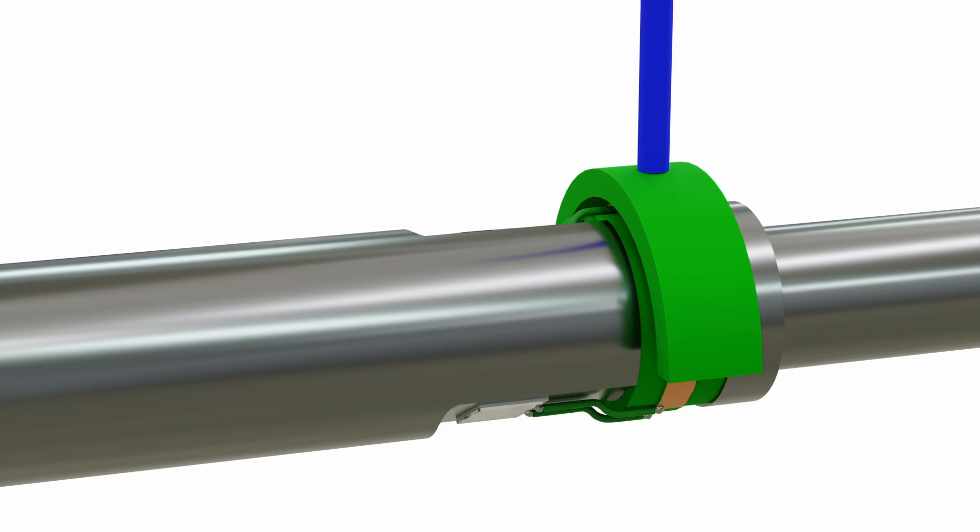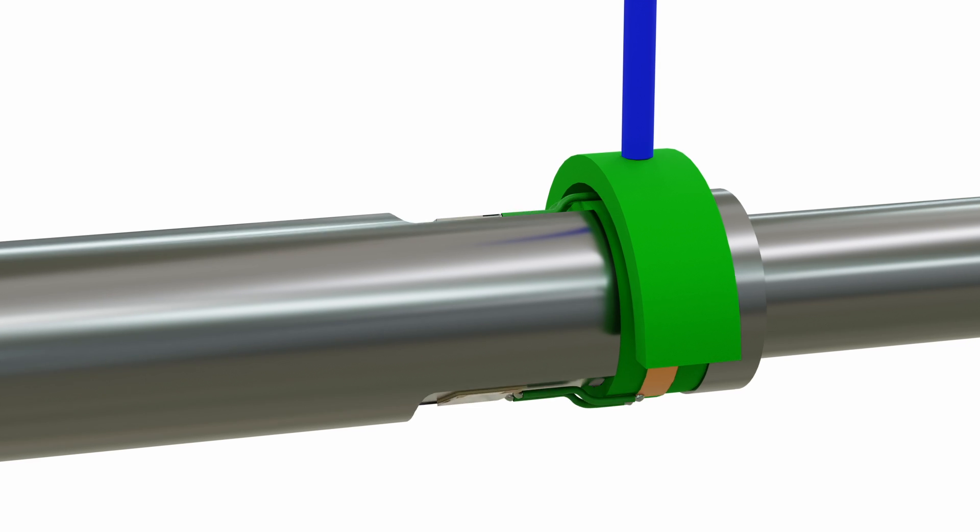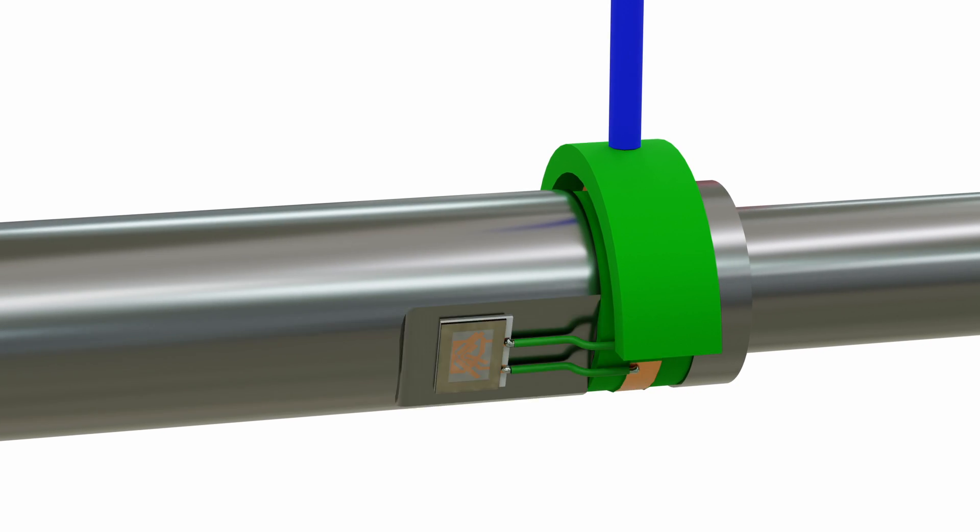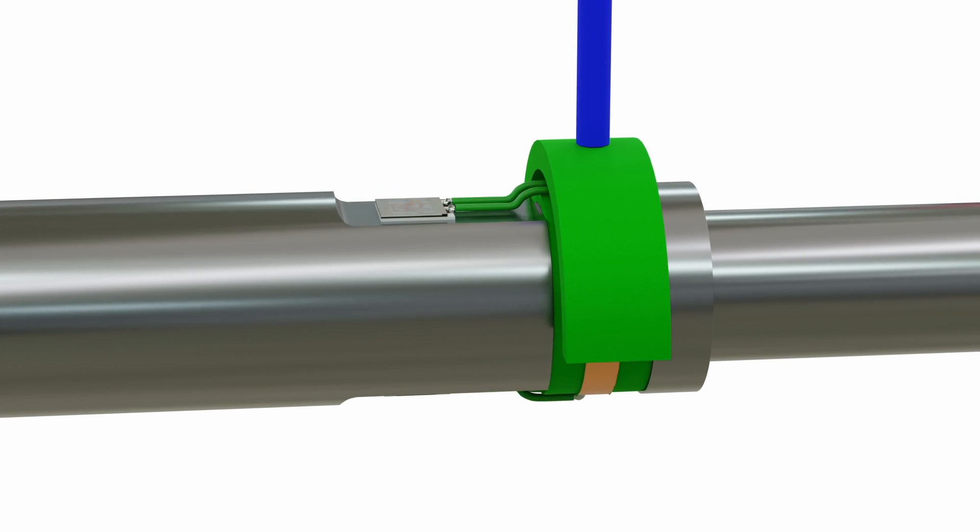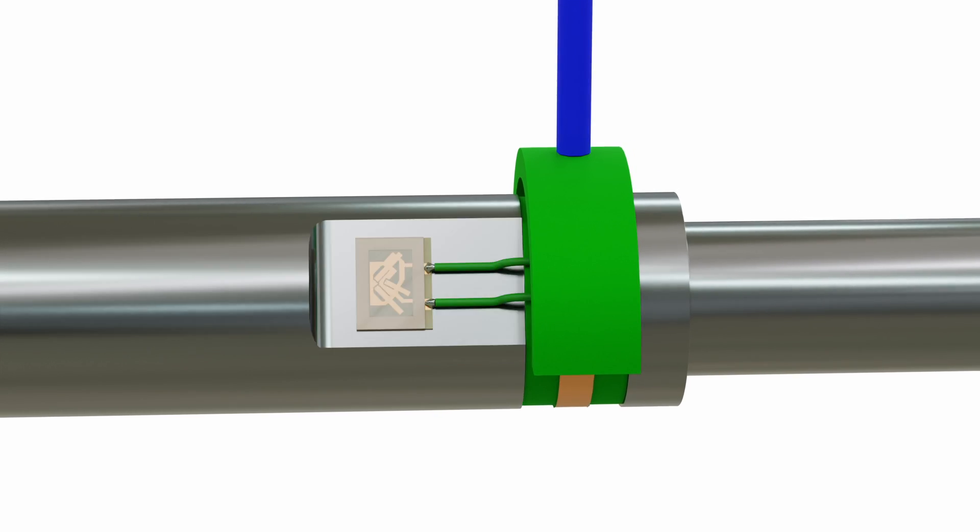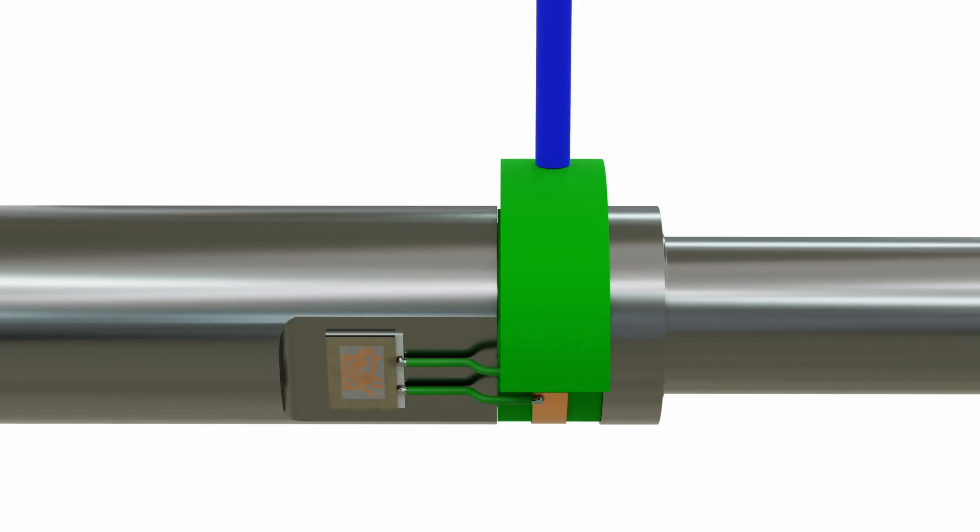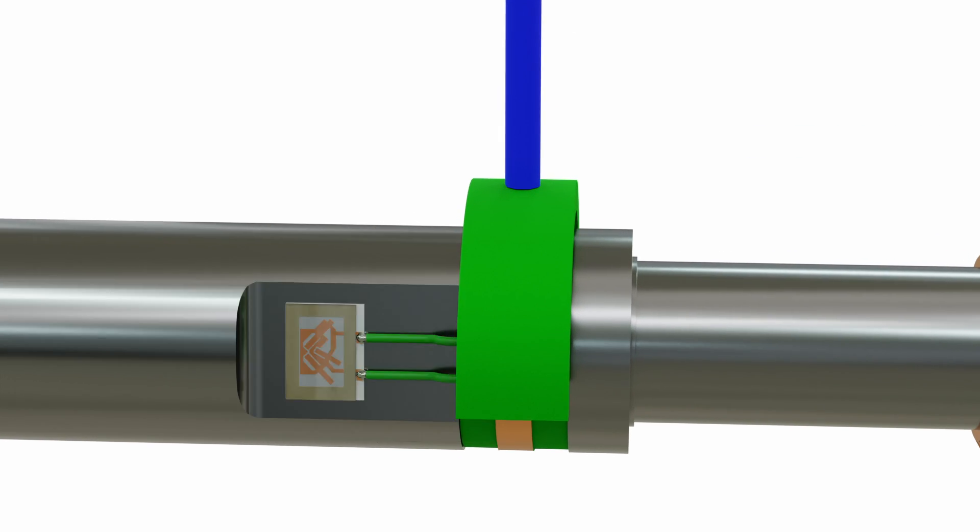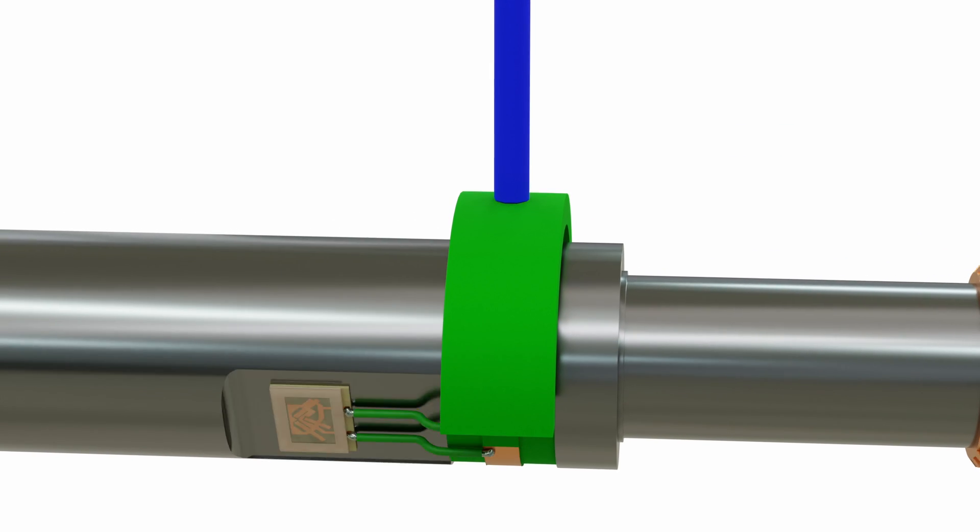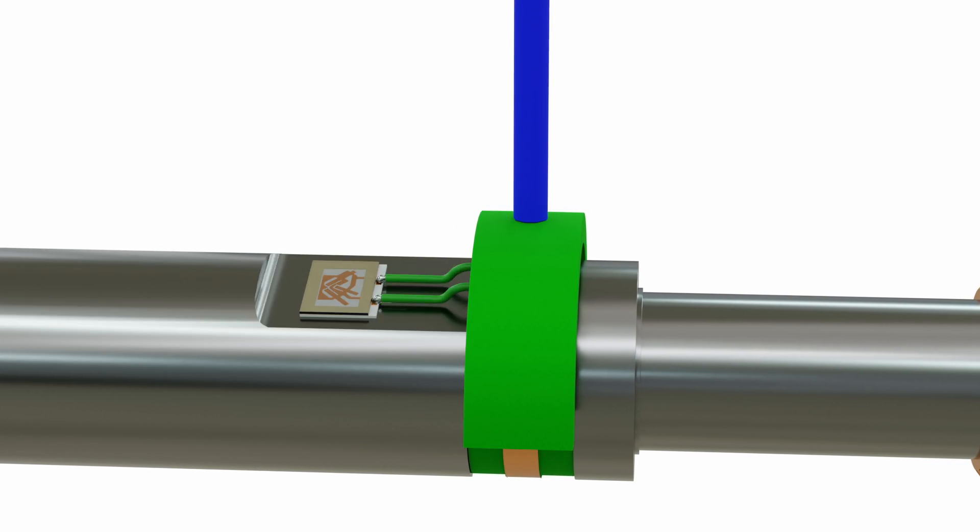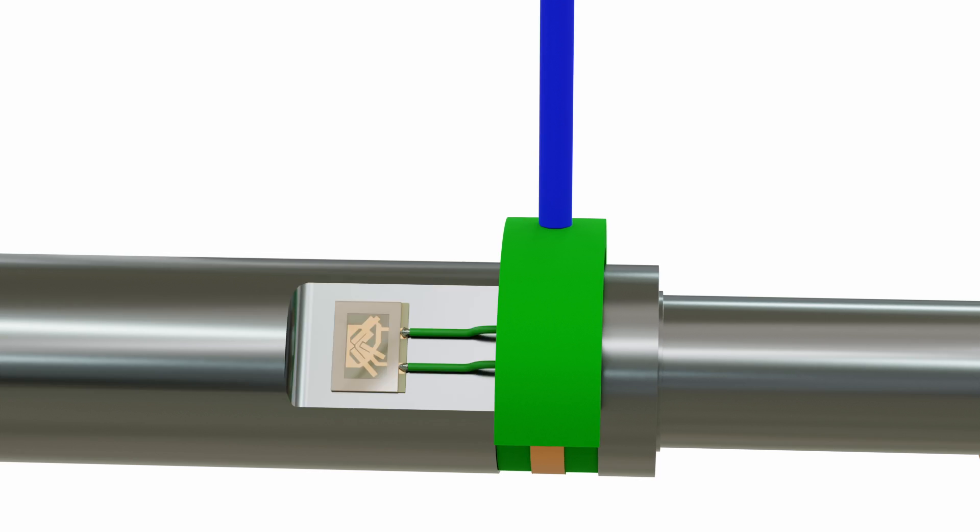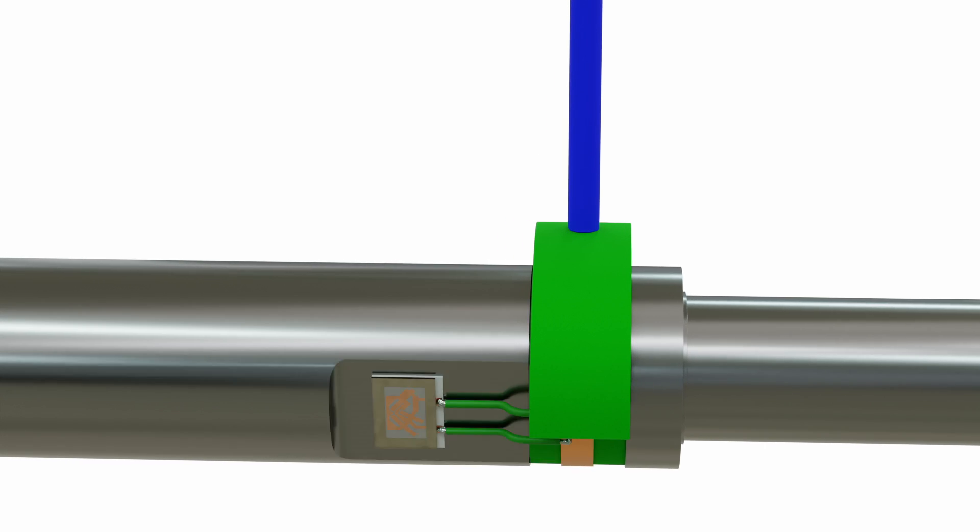The reader launches the interrogation signal, which is picked up by the sensor's antenna. The sensing element does not contain any DC power source and works as a passive backscatterer, reflecting the interrogation signal back to the reader. The backscattered signal reflects the frequency of oscillation affected by a physical measurement, such as strain and temperature. The reader analyzes the received backscattered signal and calculates the value of the physical measurement.